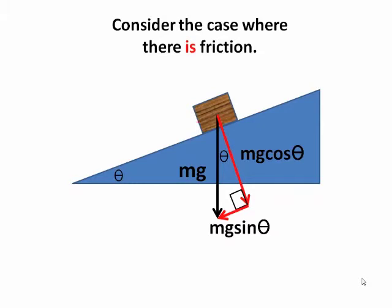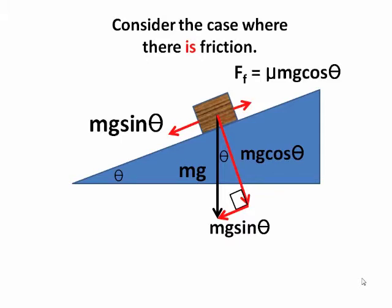Now we look at the case where there is friction. Once again, mg sin theta acts down the incline, but it's opposed by friction acting up the incline. And remember the friction is mu mg cos theta, mu times the normal force.